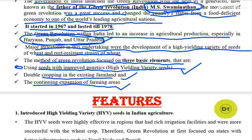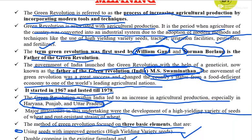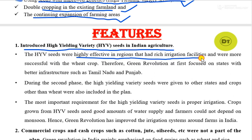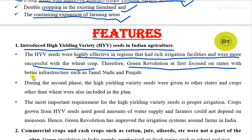The first and most important feature of green revolution in India is the introduction of high yielding variety seeds in Indian agriculture. The HYV seeds were highly effective in regions with good irrigation facilities and were more successful with the wheat crop. Therefore, green revolution at first focused on states with better infrastructure such as Tamil Nadu and Punjab.